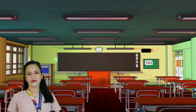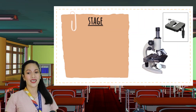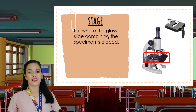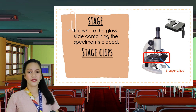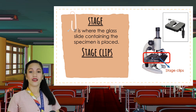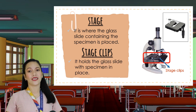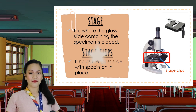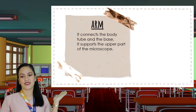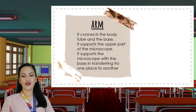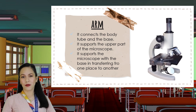Right below the objective lenses is the stage — the part where a glass slide containing the specimen is placed. Together with the stage is the stage clip, which holds the glass slide with the specimen in place. Next is the arm, which connects the body tube and the base, supports the upper part of the microscope, and is also used in holding the microscope when transferring it from one place to another.